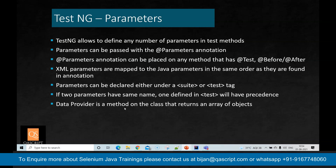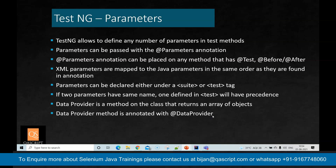There is also something called a data provider — it is a method on the class that returns an array of objects. This is used for more complex parameters and for data-driven testing, such as when you are passing cell values read from an Excel file in the form of an array of objects. The data provider method is annotated with @DataProvider, while regular parameterization uses @Parameters. Both are used for parameterization in TestNG test methods.